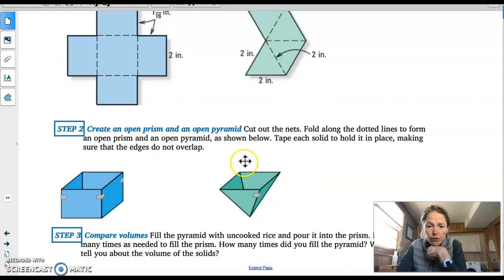And what you should have seen was that it took three full pyramids of rice to fill this prism with rice completely. And so what I wanted you guys to see was that the relationship between finding the volume of a prism and finding the volume of a pyramid is this one third relationship. So if I know the volume of this, if I divide by three, I'll get the volume of this.